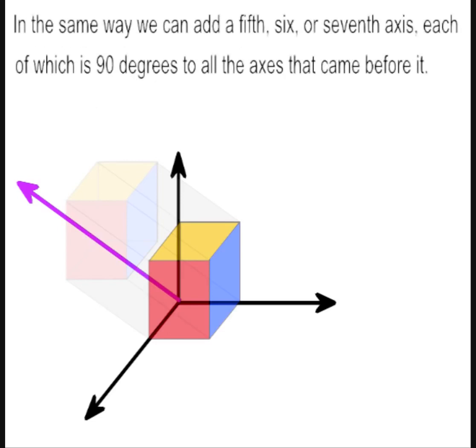In the same way, we can add a fifth, sixth, or seventh axis, each of which is 90 degrees to all the axes that came before it.